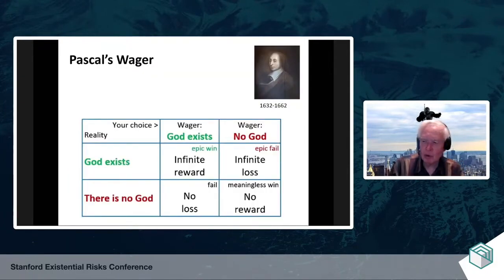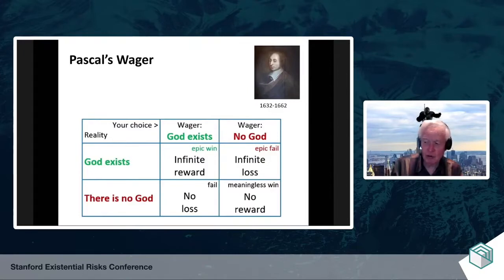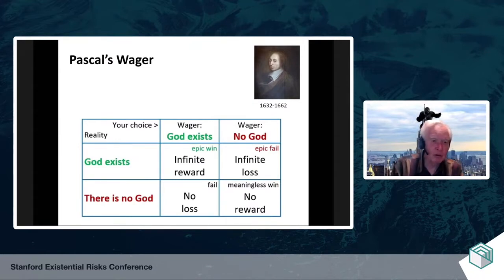Let me end this first part with a famous story by Blaise Pascal, the 17th century philosopher, who asked: should I believe in God? His answer was yes, even though he thought there was a small likelihood of God existing — because if you don't believe in God and God exists, you are doomed to a miserable eternity. So this is an example where a low-probability existential risk to himself was worth taking the action of believing in God.